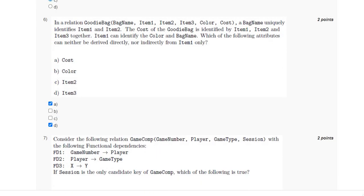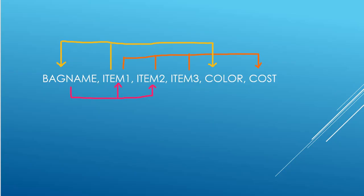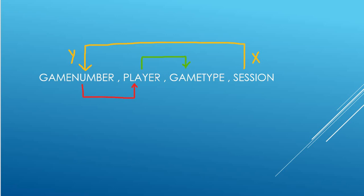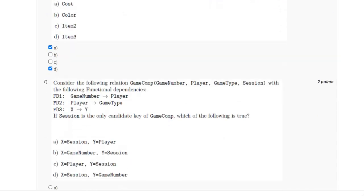For the seventh question, for the relation game company we have been given three functional dependencies in which we have to find the value of X and Y. It is given that session is the only candidate key. Player is dependent on game number, and game type is dependent on player. Since session is the primary key, it should be capable of finding all attributes. So X is session and Y is game number. Then game number is dependent on session, player is dependent on game number, and game type depends on player. So the answer is option D.